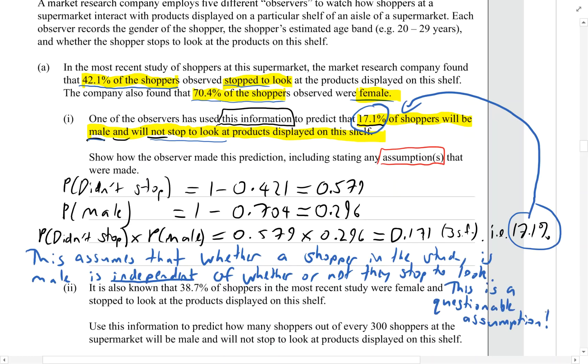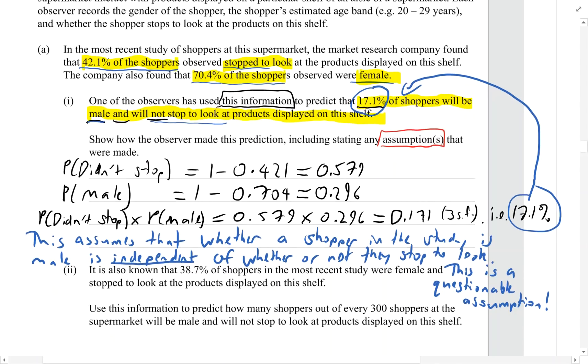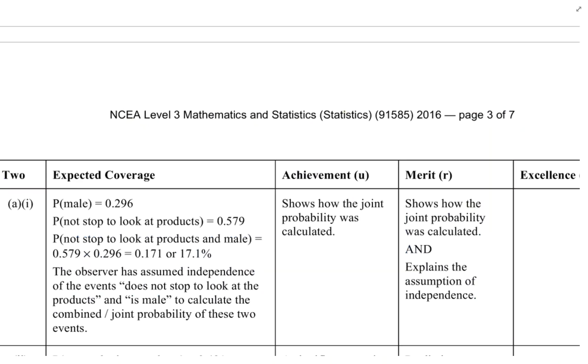Let's have a look at what the marking schedule said about this question. Their explanation is the observer has assumed independence of events does not stop to look at the products and is male to calculate the combined or joint probability of these two events, which is just a fancy way of saying the same thing that we did.